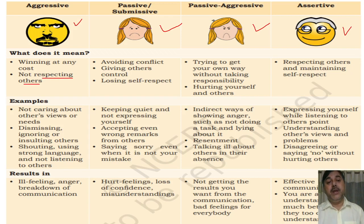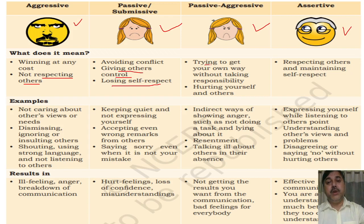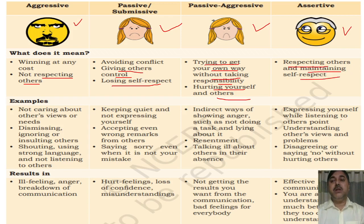Passive or submissive means the person tries to avoid conflict, giving others control and losing self-determination or self-respect. Passive-aggressive means trying to get their own way without talking about responsibilities — hurting yourself for others. Assertive means being respectful to others while maintaining self-respect.